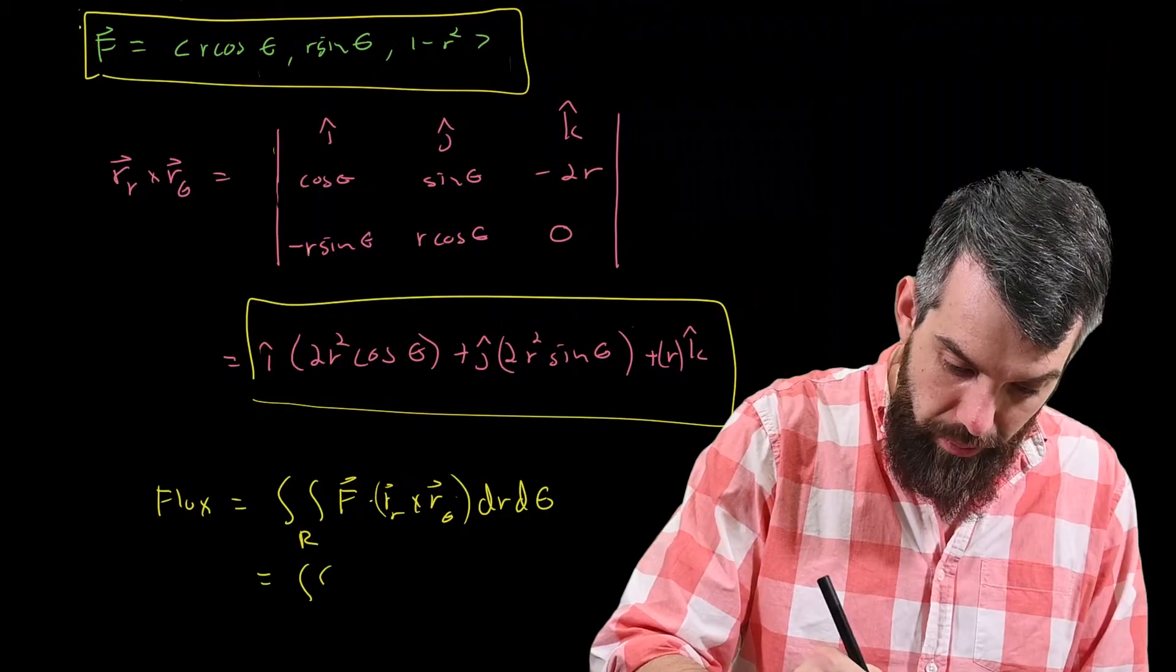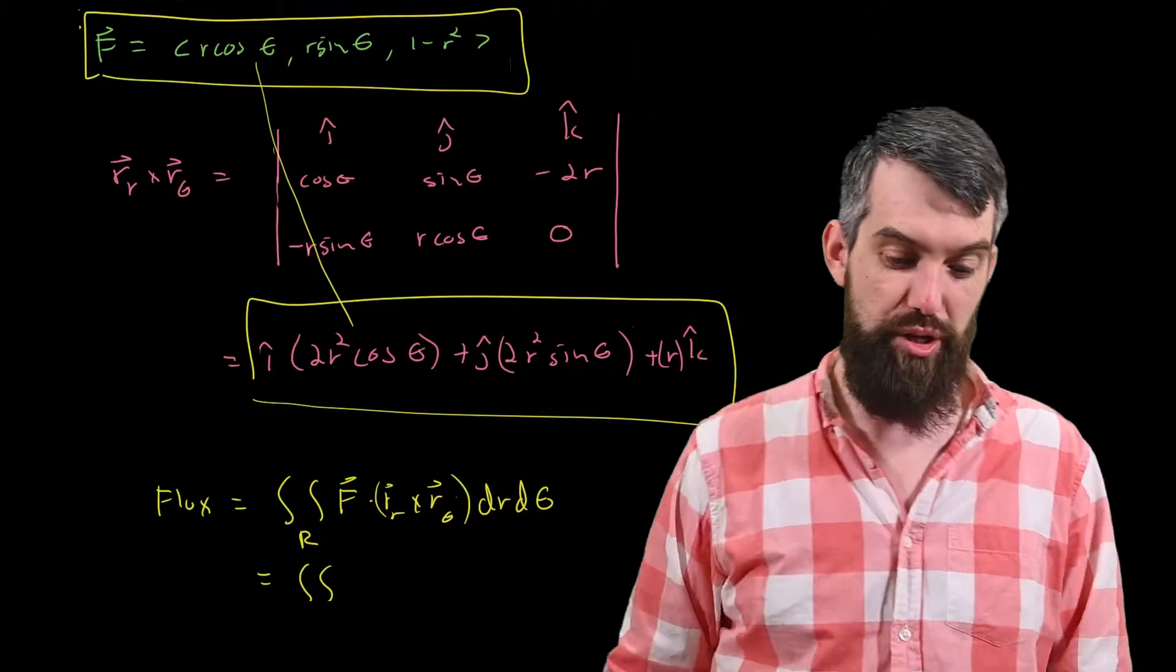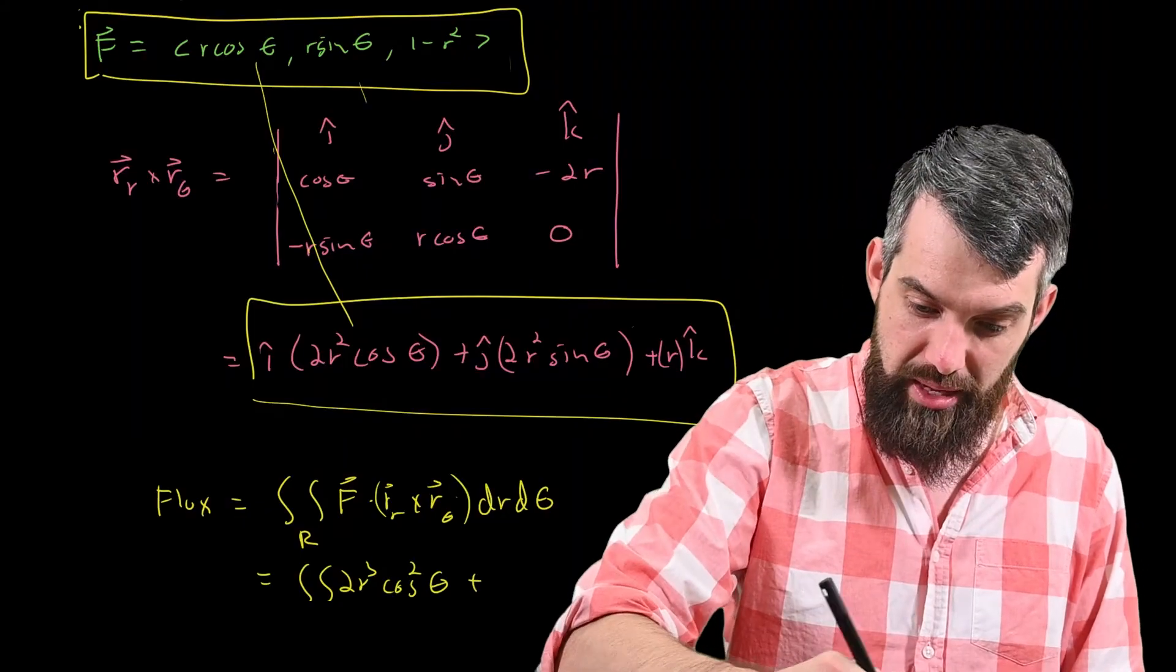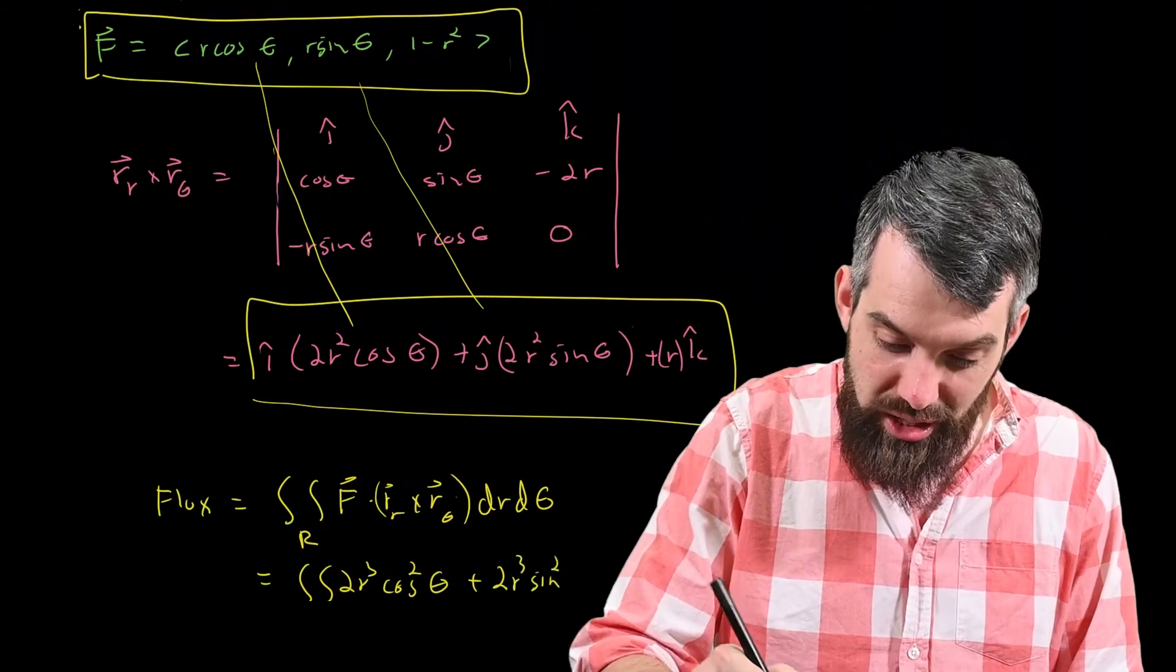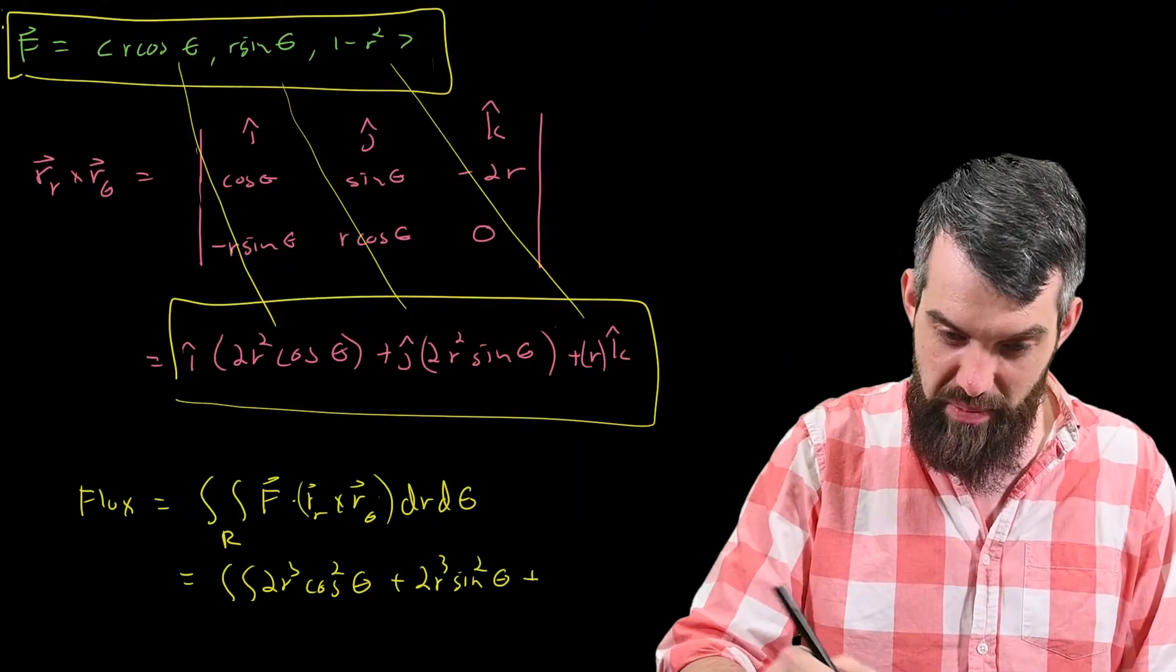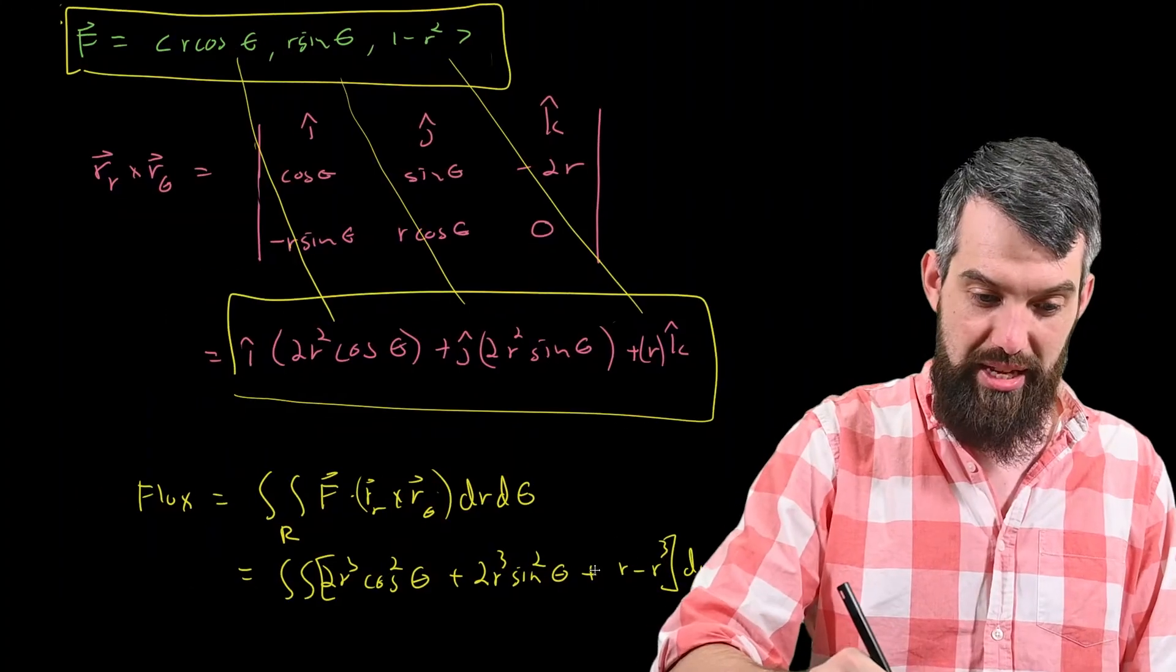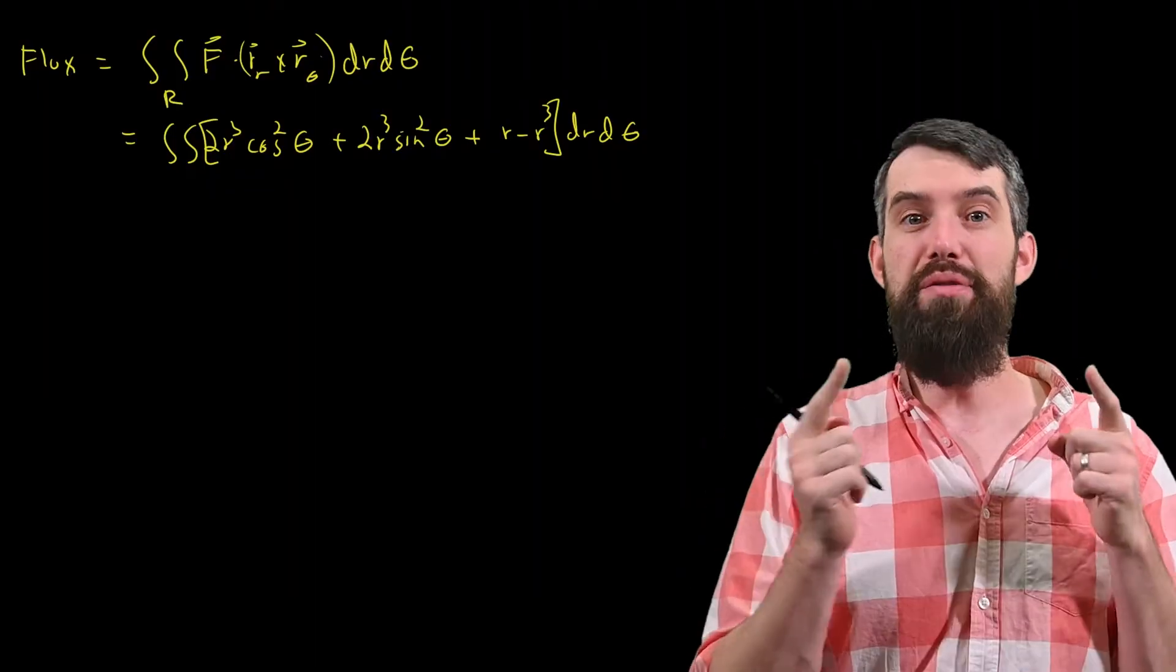Anyways, this is a double integral, and then my F dot dr, it's the first component there and the first component there multiplied together, so I have a 2, looks like r cubed cosine squared theta. Then the second component squared looks like a 2 r cubed sine squared theta. I always love those cosine squareds and sine squareds coming together that way. And then finally, comparing the third components is going to be a plus r minus r cubed, and then all of this dr d theta.